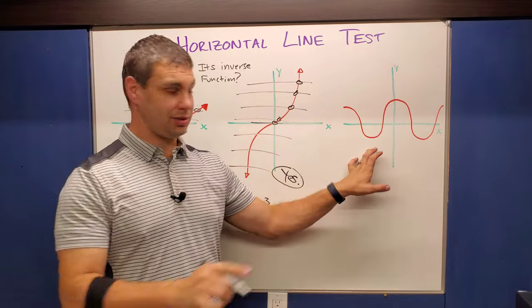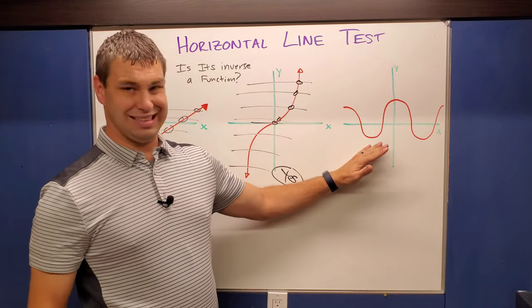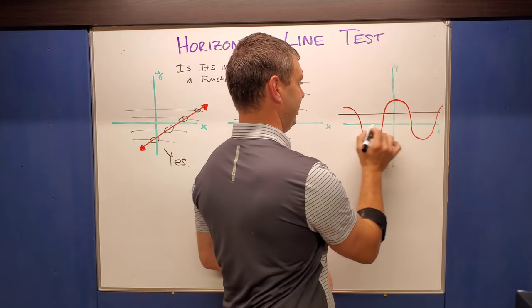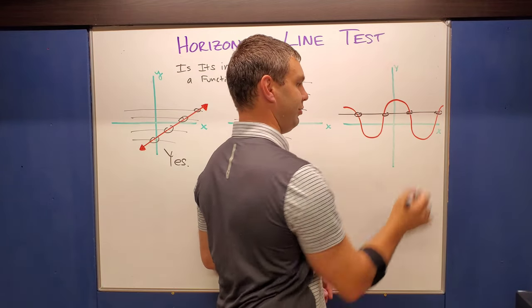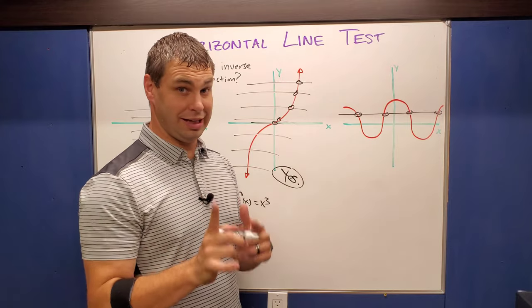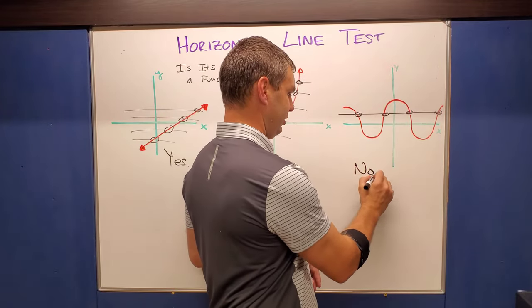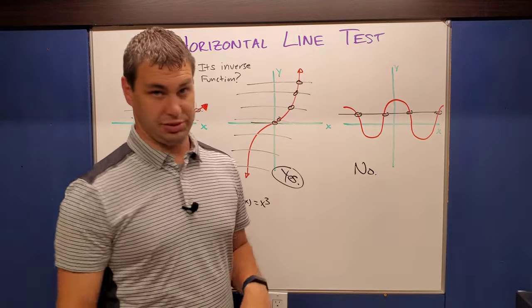And then clearly, hopefully you can see that this one, kind of like a sine wave, it's going to be a no because if I were to draw a line right here, it's one, two, three, four, right? That's way more than one time. We're only allowed one hit. And this is more than that. So its inverse is not a function.